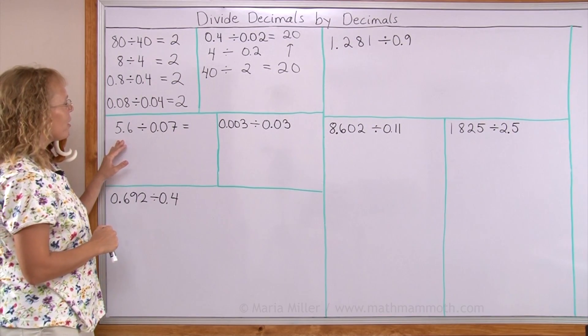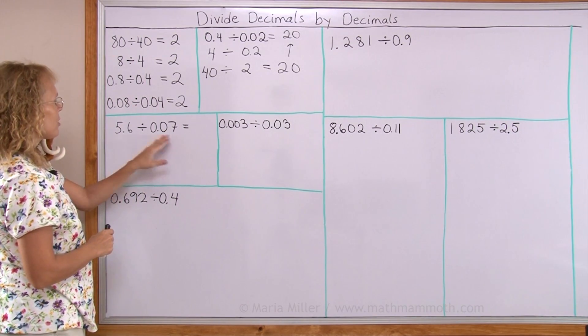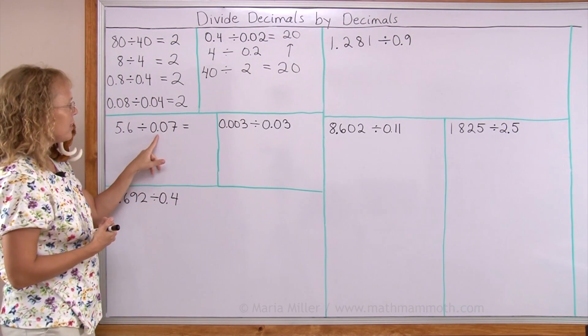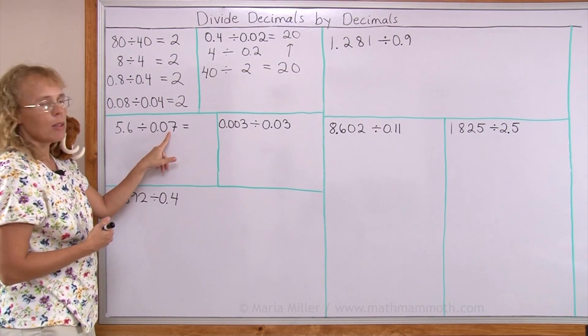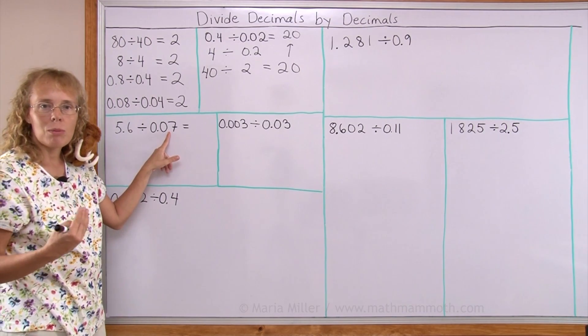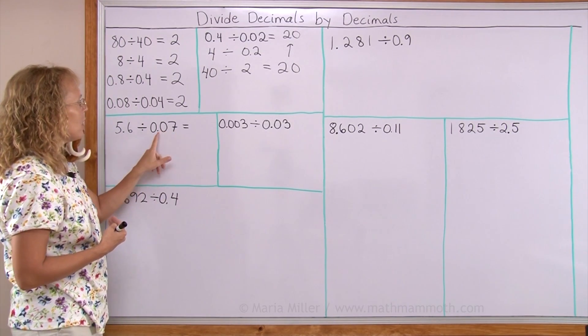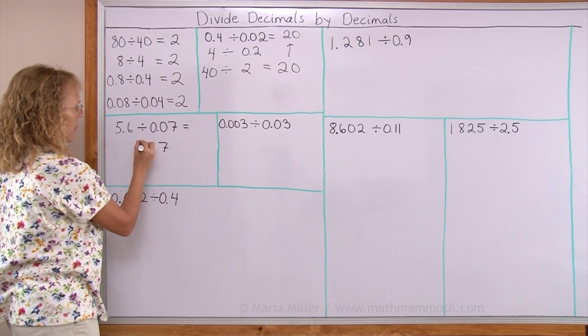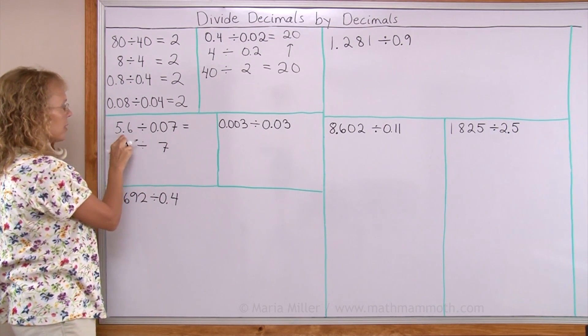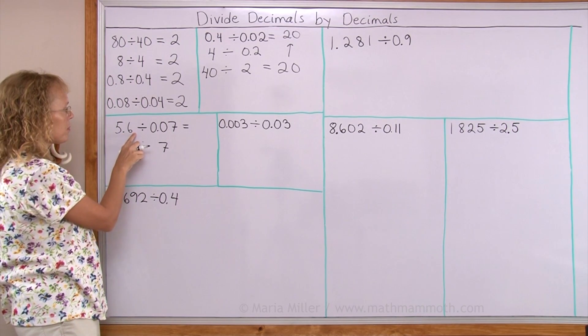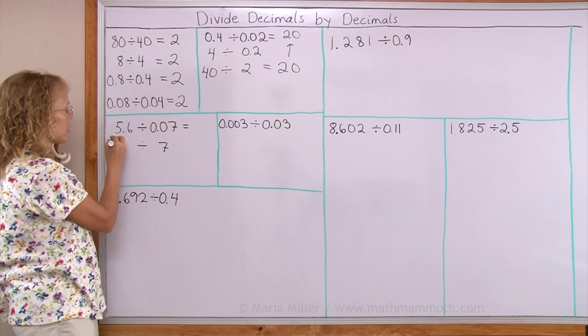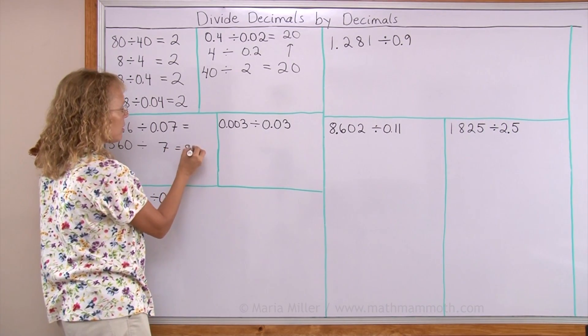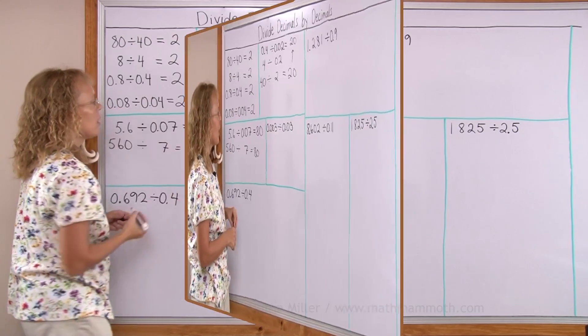Let's look at it over here. 0.07 and 5.6. I will multiply both of them by 10, first of all. But that is not going to give me a whole number divisor yet. So I'll just multiply both by 100 and then this will become 7. And this times 100. Here would be 56, 560. 560 divided by 7 is 80. So this is 80. Here.